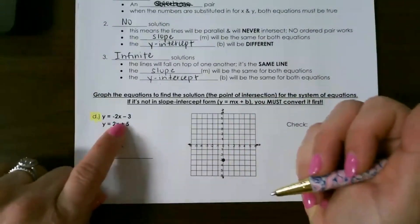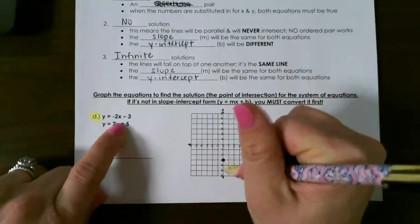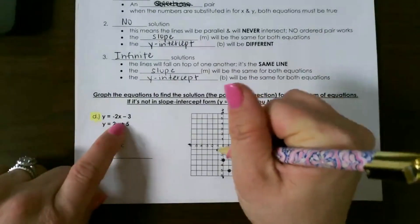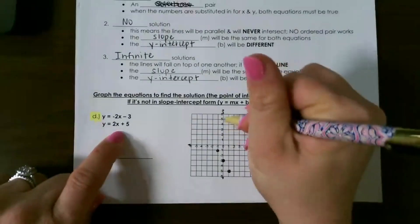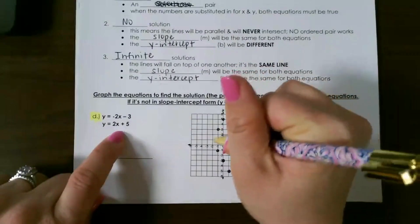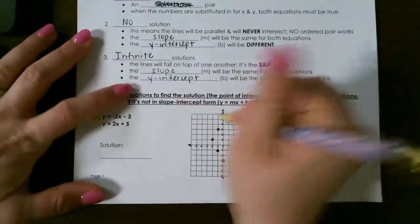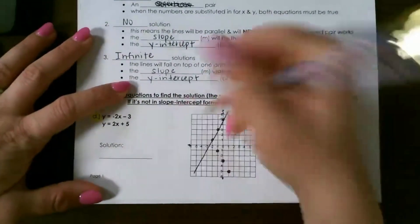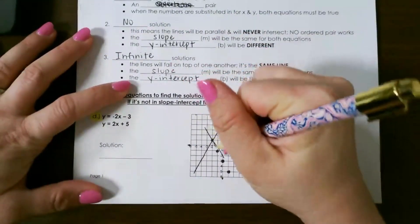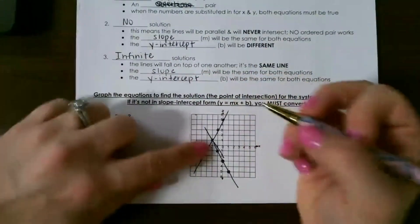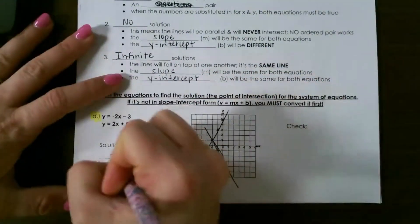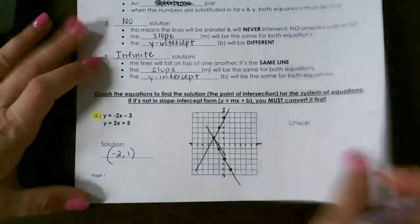Then I want to graph some more points with a slope of negative two over one. So there's my first line. Then here's my second line, and then you just simply connect your dots to create your line. And this is the point that they intersect at, which would be negative two, one. So that would be our solution for that first one.